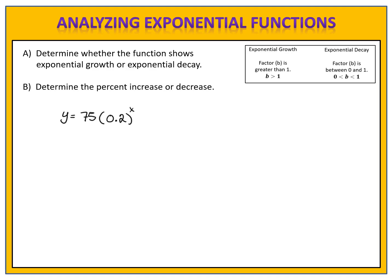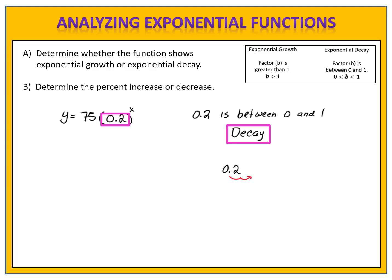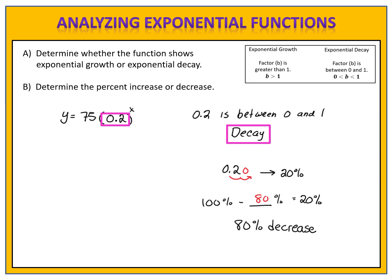Let's look at another example. We have the function y equals 75 times 0.2 to the x. The factor is 0.2. Because the factor is between 0 and 1, we have a function that exhibits exponential decay. Now we need to determine the percent of decrease. The factor is 0.2, which is 20%. That means 20% remains. We started with 100%, we took some percent away, and we ended up with 20% remaining. What percent was subtracted? 80%. So this function has an 80% decrease. The function y equals 75 times 0.2 to the x is an exponential decay function with an 80% decrease.